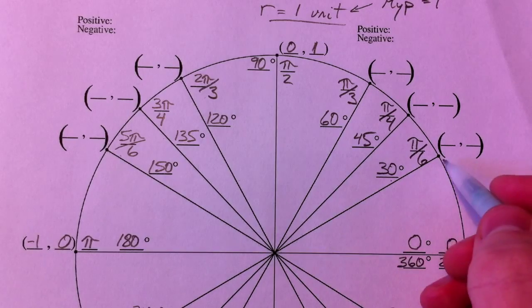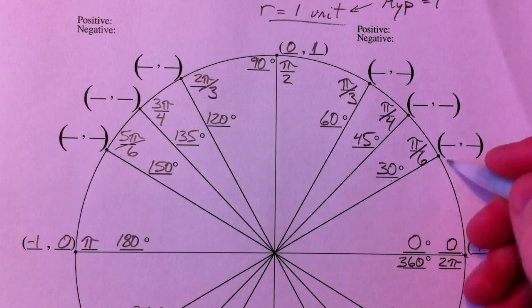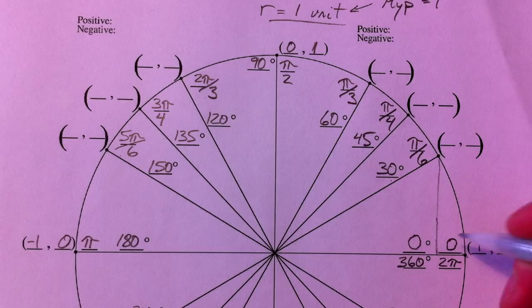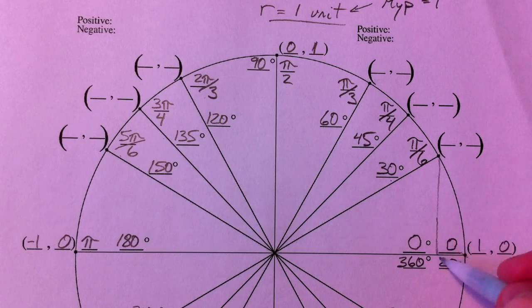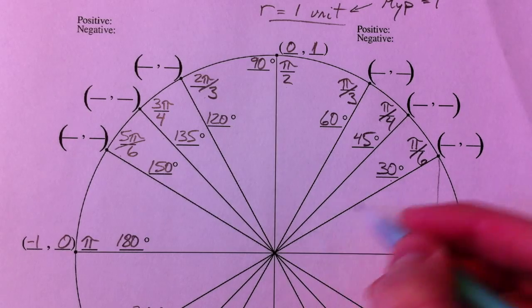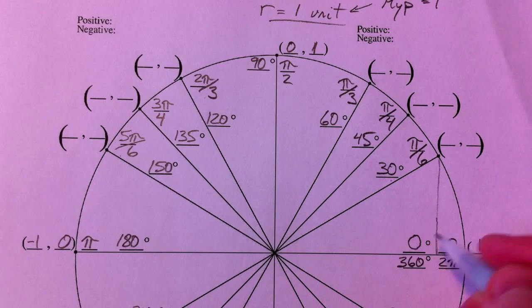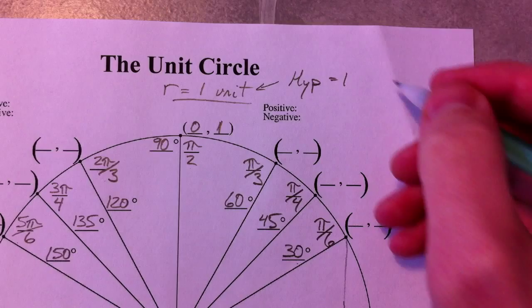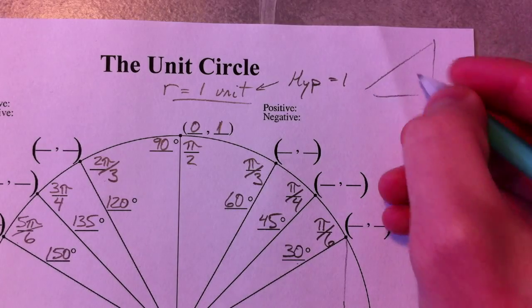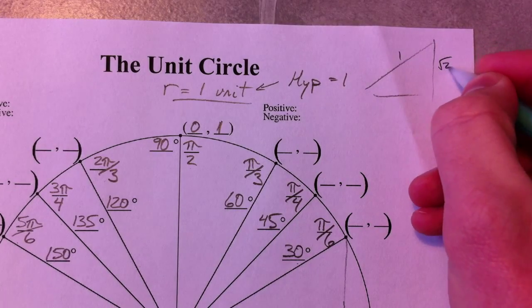Now, 30, 60, 90 shows up in this first one, and so notice that the y side is the short side. And so you have your, we translated all our 45s into 1 and root 2 over 2, root 2 over 2.